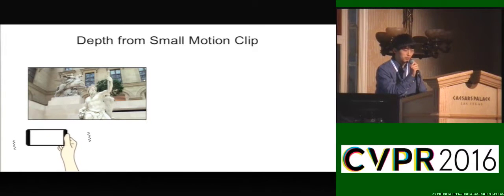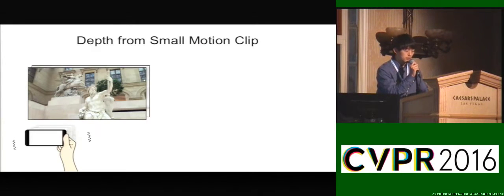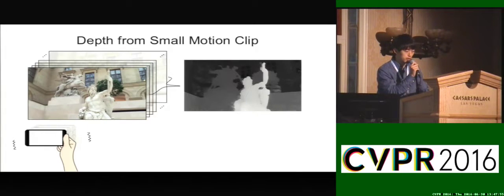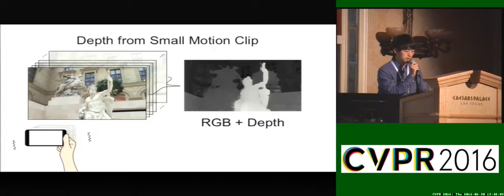The beauty of small motion is that it can naturally happen like this. If we capture a few more images just before and after the shooting, we can easily obtain this kind of small motion clip. In this research, we recover a high quality depth map from an uncalibrated small motion clip with a simultaneous self-calibration of the camera. To our knowledge, this is the first self-calibrating approach for depth from small motion.